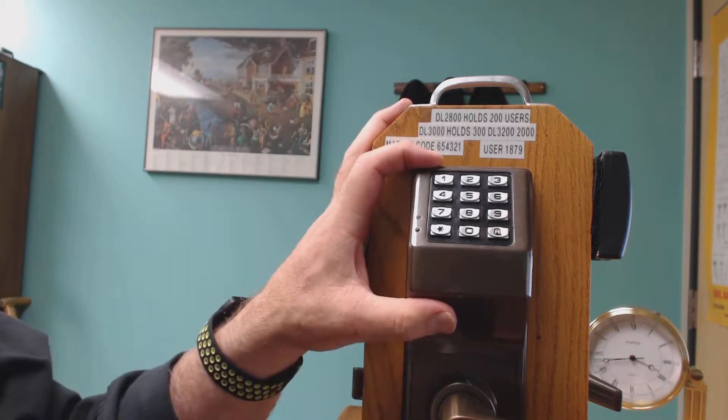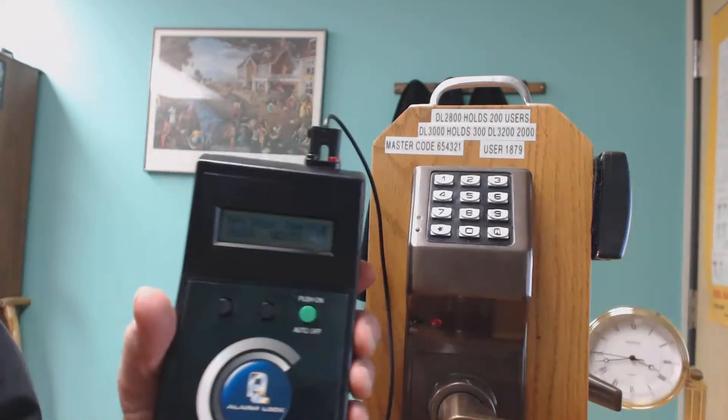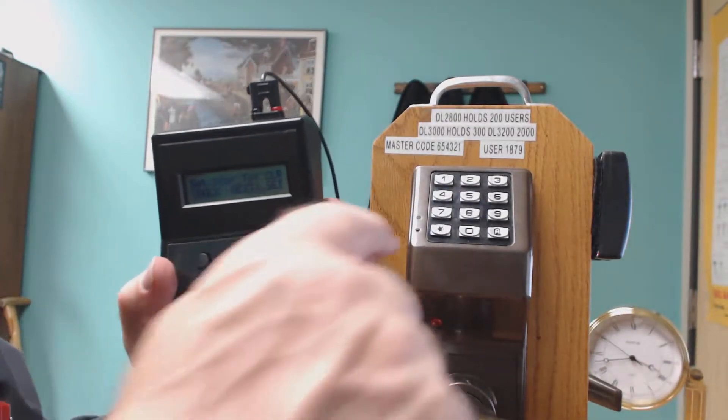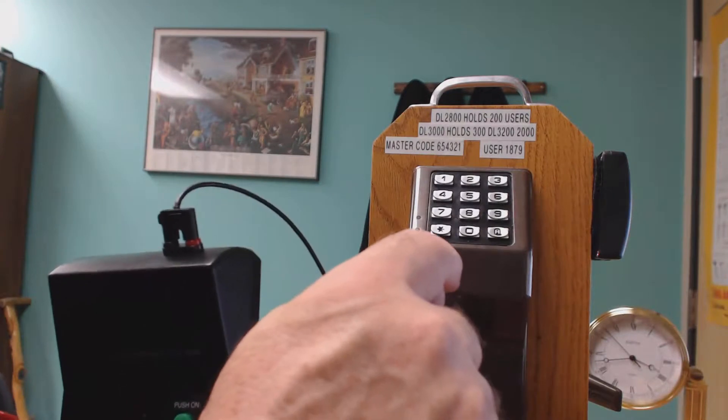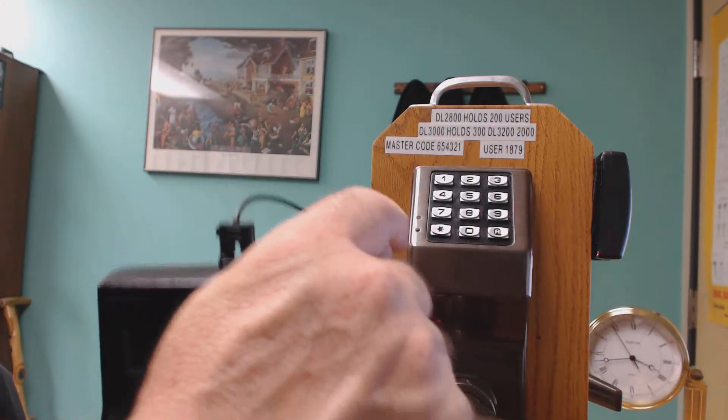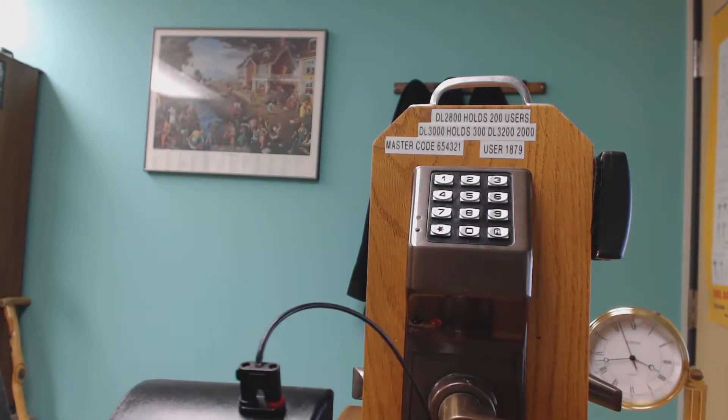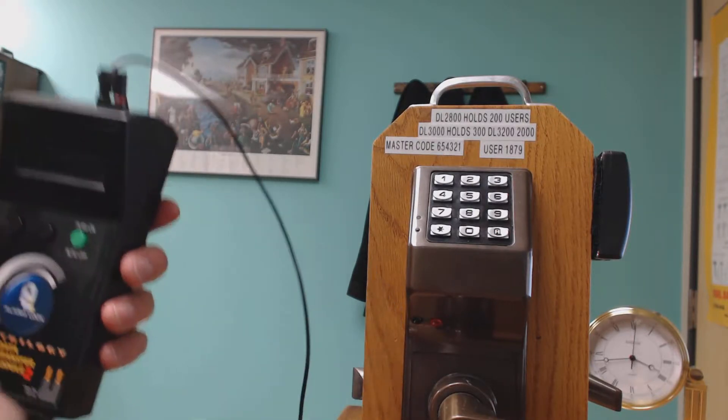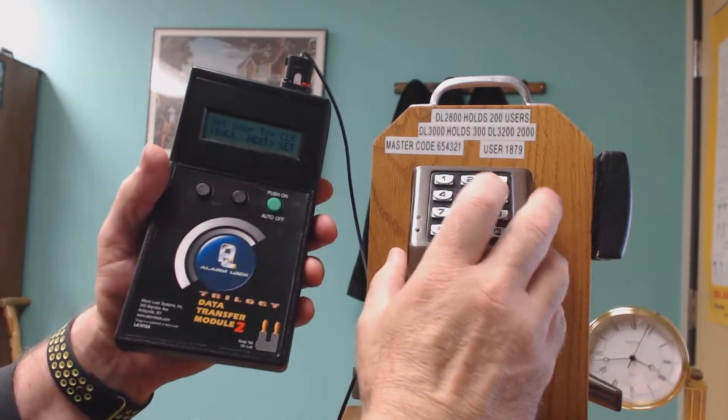You programmed it in the software, but the lock doesn't know what your number is. So you have to manually type in the master code and the DTM code. We're going to put in the master code.